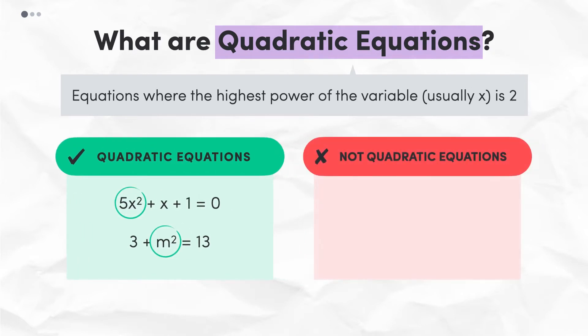On the other hand, 4x squared plus 5x cubed equals 2 is not a quadratic equation. Even though the equation contains an x squared term, the highest power of the variable is 3. 9m plus 6 equals 3 is also not a quadratic equation, because the highest power of the variable is 1.